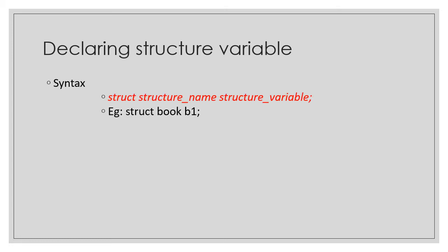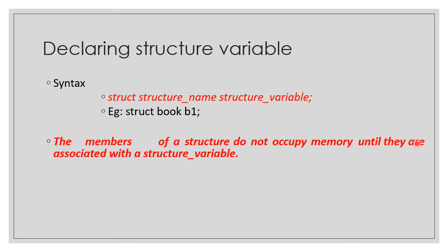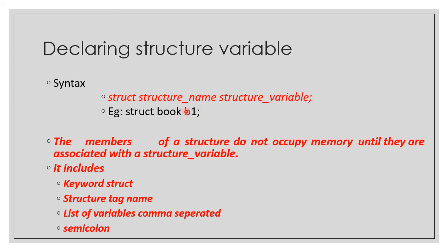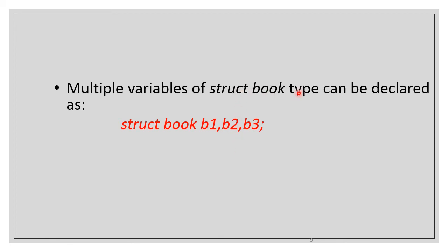You need to declare a structure variable. To declare a structure variable, use struct followed by the structure name, then the variable name. Multiple variables can be declared comma-separated, followed by a semicolon. Multiple variables of structure book type can be declared this way.